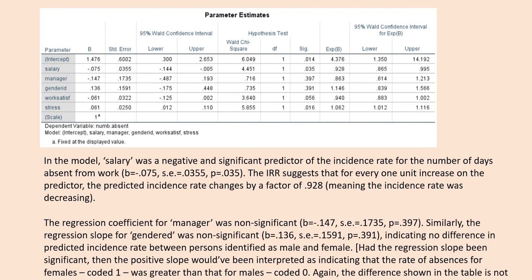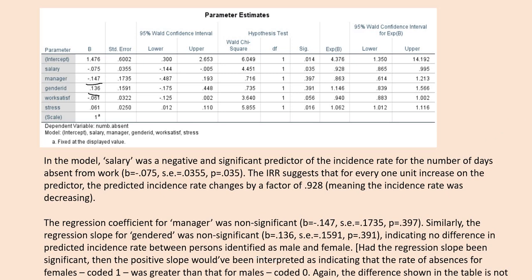Looking at interpreting our results: salary was a negative and significant predictor of the incidence rate for the number of days absent from work. The incidence rate ratio suggests that for every one unit increase on the predictor, the predicted incidence rate changes by a factor of 0.928. The regression coefficient for manager was non-significant, and similarly the regression slope for gender ID was non-significant as well, indicating no difference in predicted incidence rate between persons identified as male and female.